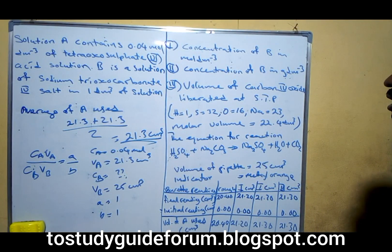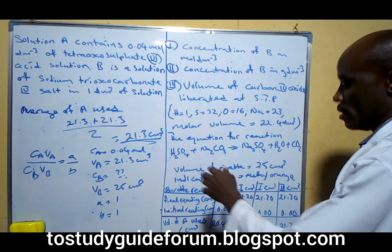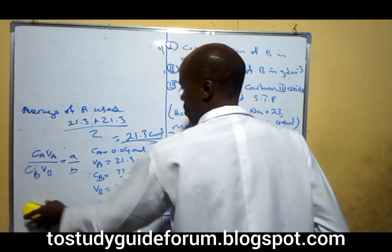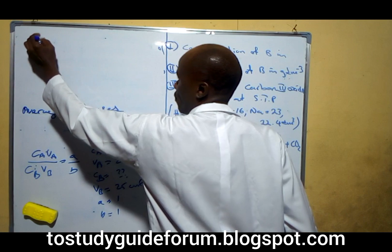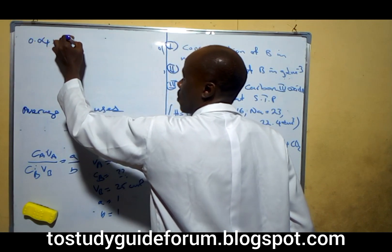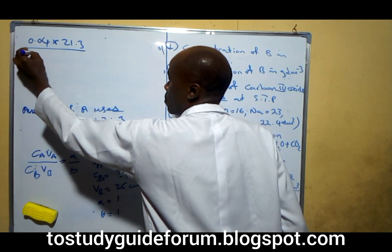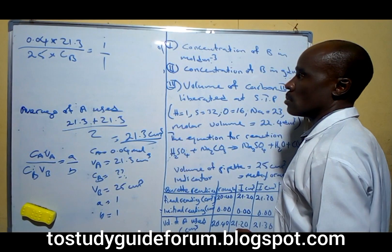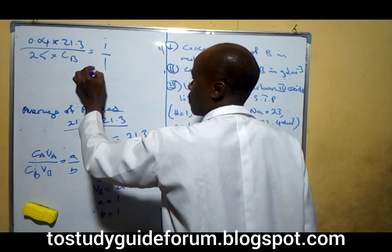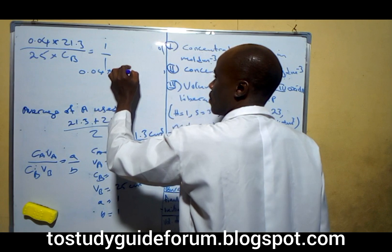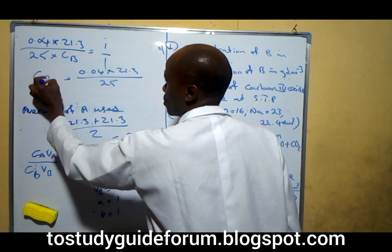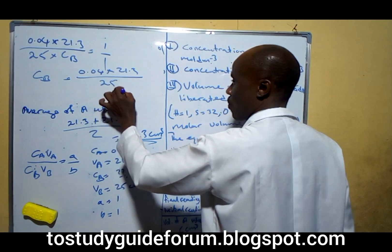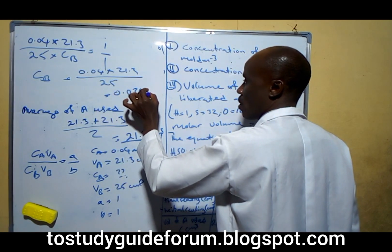We're going to substitute. If you substitute the values, we have 0.04 times 21.3 all over 25 times CB equals 1 over 1. Cross multiply, we have 0.04 times 21.3 all over 25 equals CB.